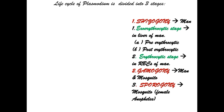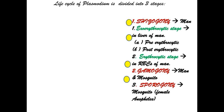The life cycle of Plasmodium is divided into three stages. First, schizogony, which occurs in humans — it has an exoerythrocytic phase in the liver and an erythrocytic phase in the RBCs. Second, gametogony, which starts in humans and completes in the mosquito. Third, sporogony, which occurs in the mosquito.